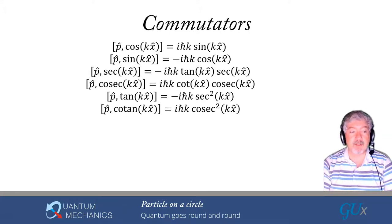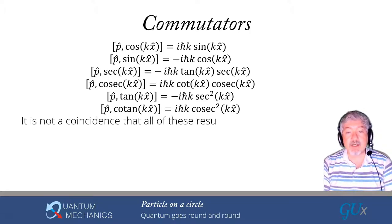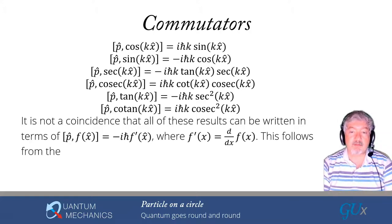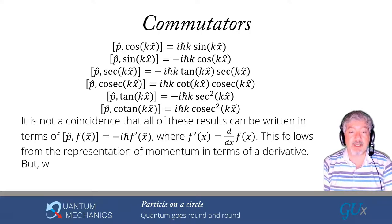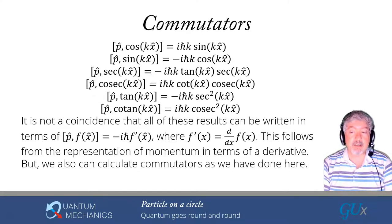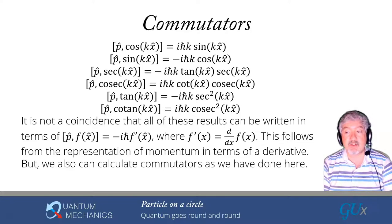We've now figured out all six trig commutators. It's not a coincidence that these results can be written as: the commutator of p with f(x) equals minus i h-bar times f-prime(x), where f-prime is the derivative of f. This comes from the representation of momentum as a derivative operator. I prefer deriving them the way we've done it here because it gives a chance to exercise the Leibniz identity.